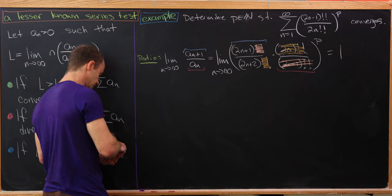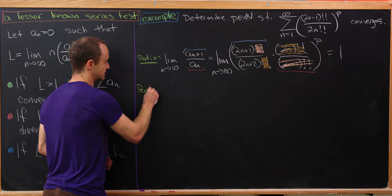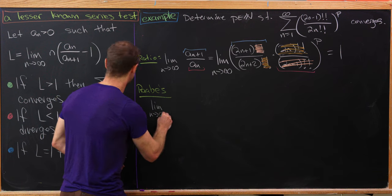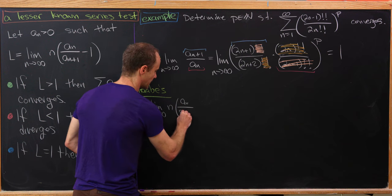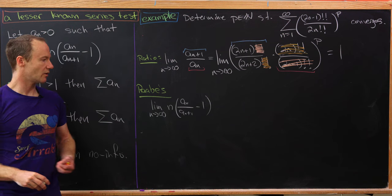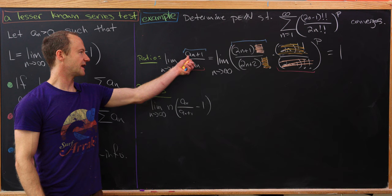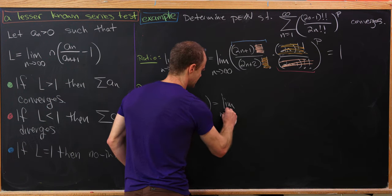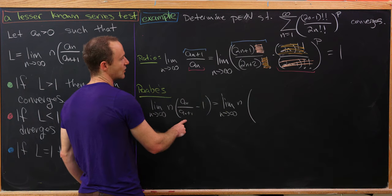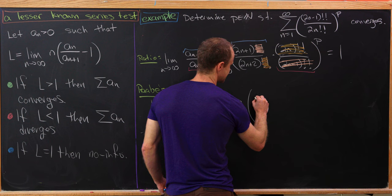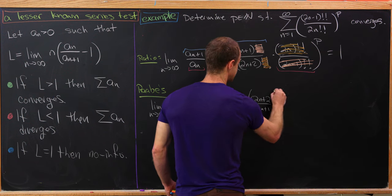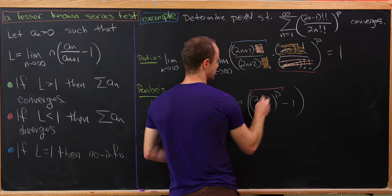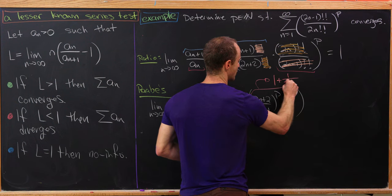Since the ratio test is inconclusive, we need another test — Raabe's test. We need to look at the limit as n goes to infinity of n times (a_n over a_{n+1} minus one). We've already calculated a_{n+1} over a_n, so using its reciprocal, a_n over a_{n+1} gives us (2n+2 over 2n+1) raised to the p power. So we need the limit as n goes to infinity of n times [(2n+2 over 2n+1)^p minus one].